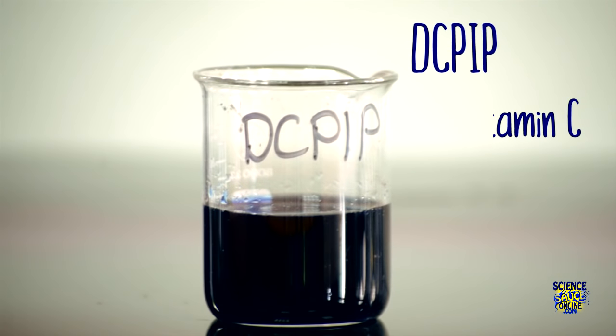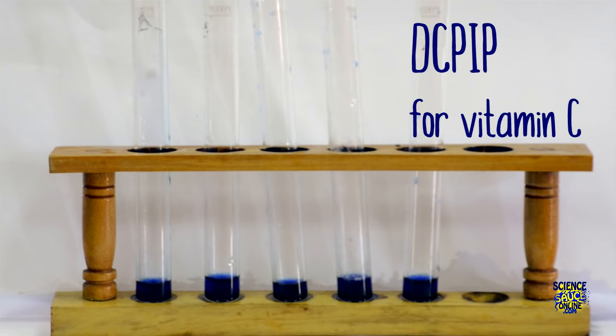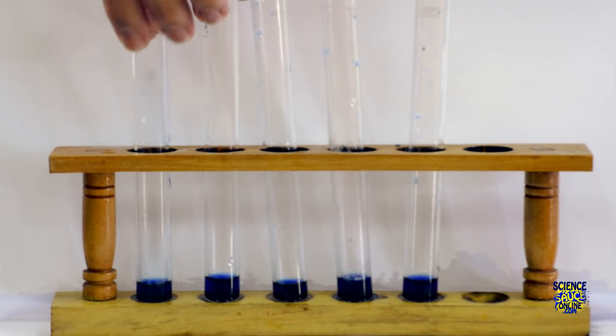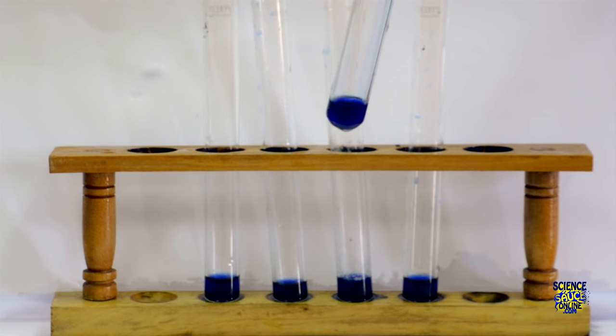We use DC-PIP to test for the presence of vitamin C. Fill your test tubes up with DC-PIP without your samples present in them. Then add your samples into it drops at a time and shake as you're doing it.